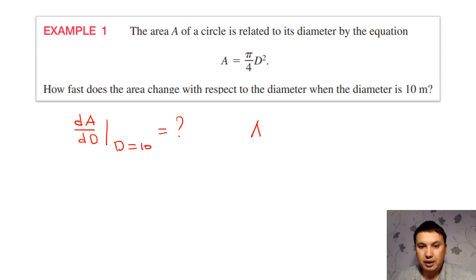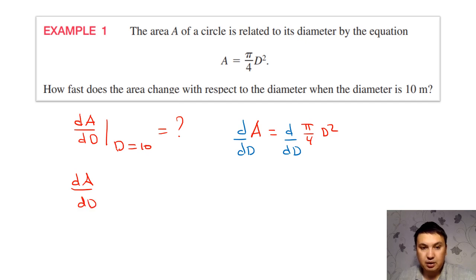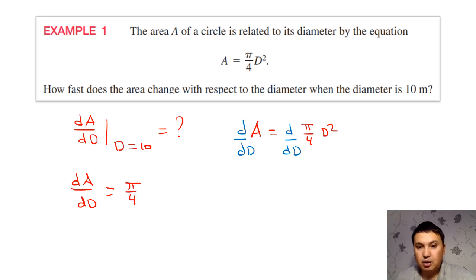We have A equal to π over 4 times D squared — that's given. Let's take the derivative of both sides with respect to capital D, which is diameter. On the left, that's the quantity we would like to find. On the right, we have π over 4, which is constant, so we can take it out, and then we are left with the derivative of D squared.